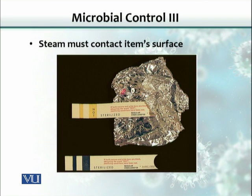It is very important that during autoclaving you should not use aluminum foil, though many people in the lab use it to cover objects. Aluminum foil does not allow steam to penetrate, and steam penetration is critical for achieving sterilization. Instead, you can use simple paper, parchment paper, or a porous plastic wrap.